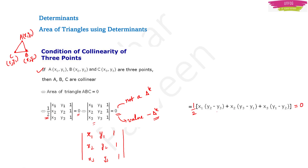If it is a triangle, you will have some area. At that point you multiply the determinant result by one-half to get the area of the triangle.